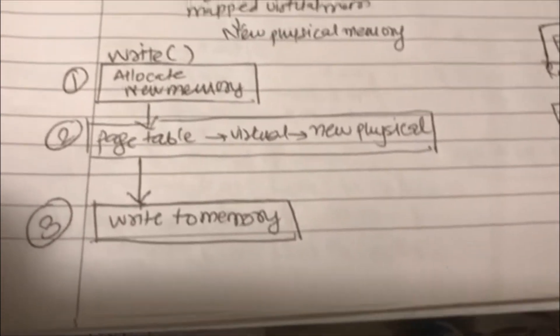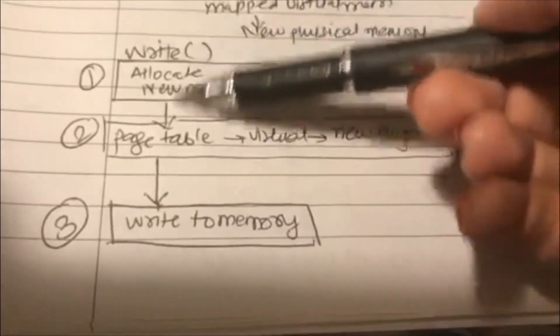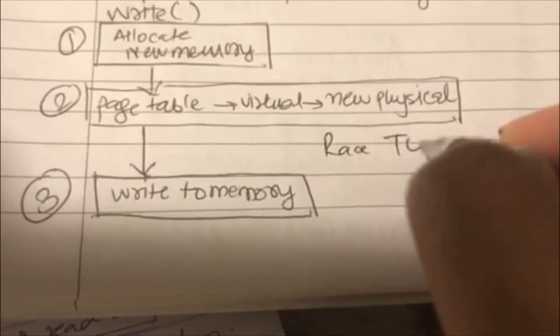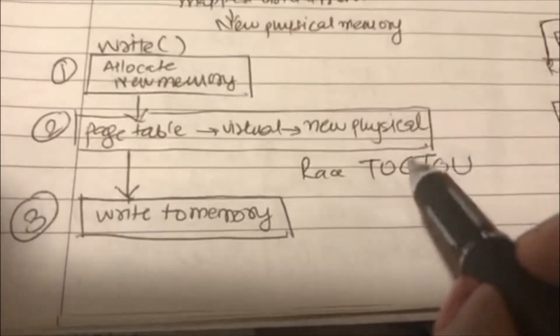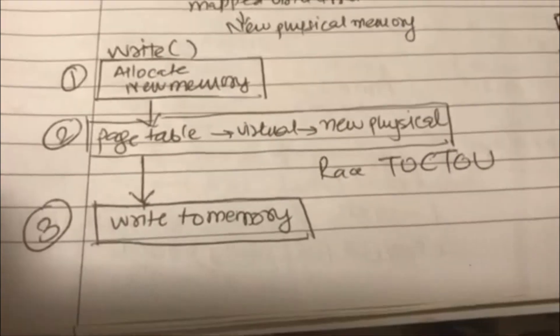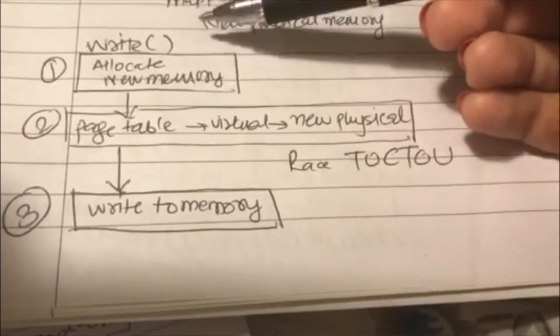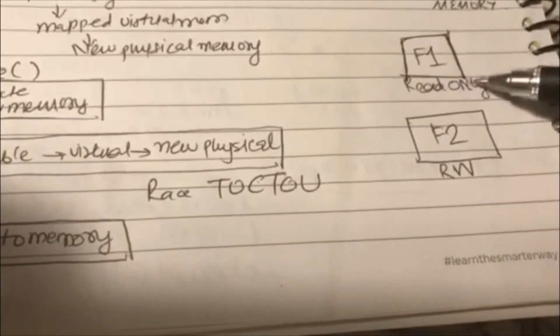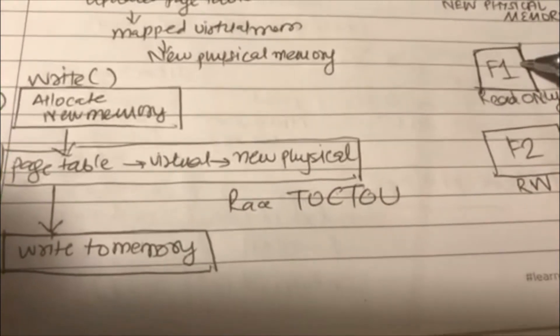Now, how can you use this as an attack? The write process has three stages that happen together as one single process — they are supposed to happen atomically. The attack happens here is where your race condition, or time-of-check to time-of-use, comes in. At the time of the first write being executed, it is checking that a file f1 is read-only, so in that case it will not allow a write.